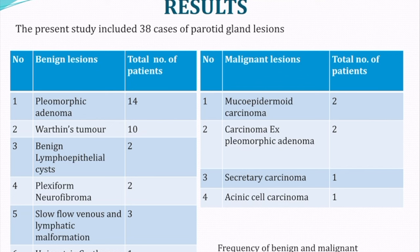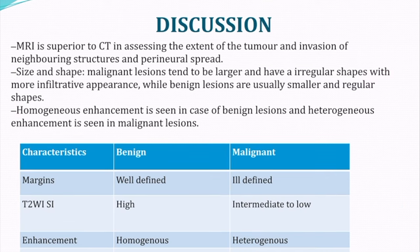The study included 38 cases, of which pleomorphic adenoma was the most common benign lesion, and mucoepidermoid carcinoma with carcinoma ex-pleomorphic adenoma were the most common malignant lesions. Most benign lesions showed well-defined margins, high signal intensity on T2-weighted images, homogenous enhancement, and absent necrosis. Malignant lesions showed intermediate to low signal intensity on T2-weighted images, heterogeneous enhancement, and presence of necrosis.